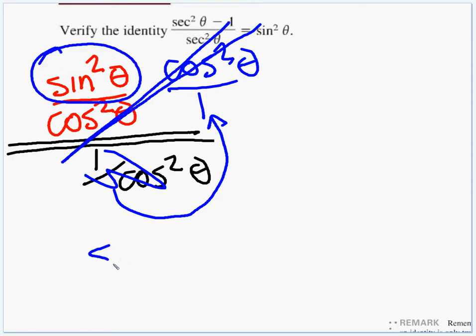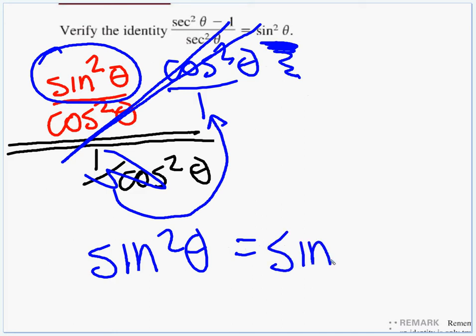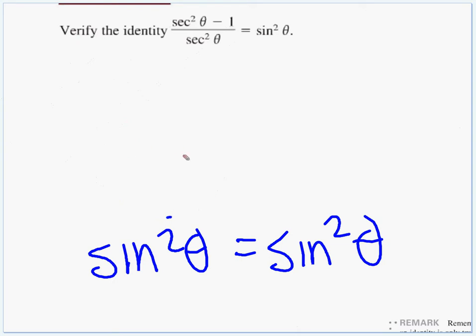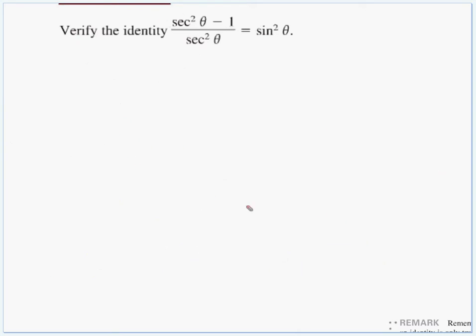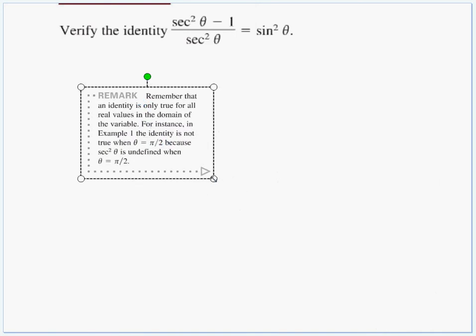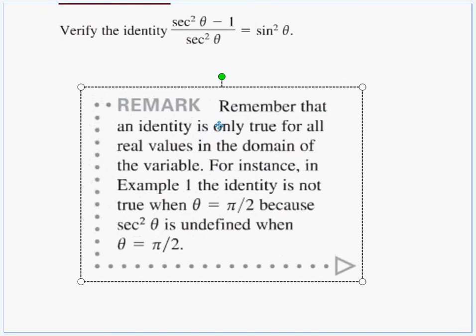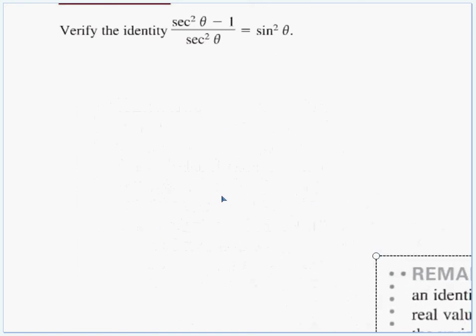So what are we left with? Sine squared. Sine squared theta equals, what's on the other side of equals? What is our finish line? Sine squared theta. So we manipulated the left side until it matched the right side. Excellent. And what's this remark? Remember that an identity is only true for all real identities in the domain. For instance, in this example, it would not be true when theta is a half pi because our secant squared would be undefined. So it is true as long as that is a member of the domain.